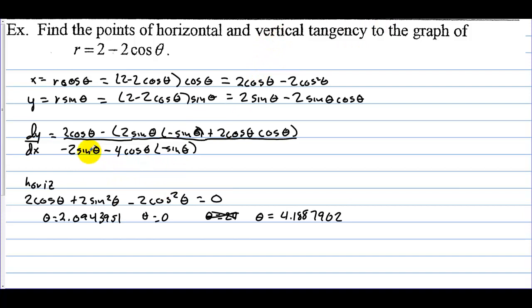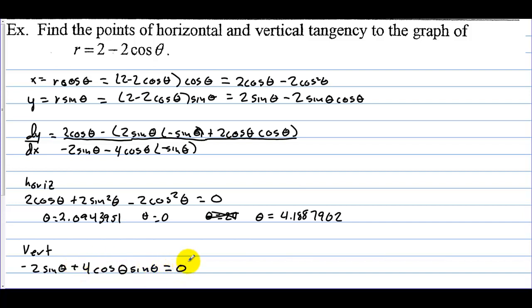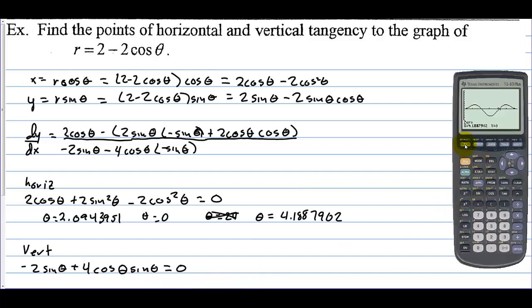Now we need the vertical tangency points, and those occur when the denominator equals 0. For vertical tangents, we need negative 2 sine of theta plus 4 cosine theta sine theta to equal 0.